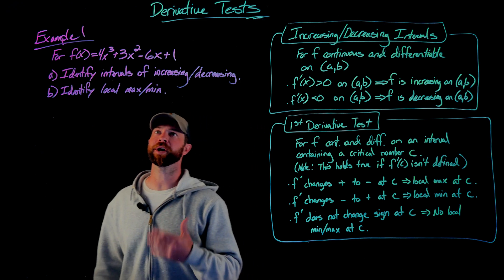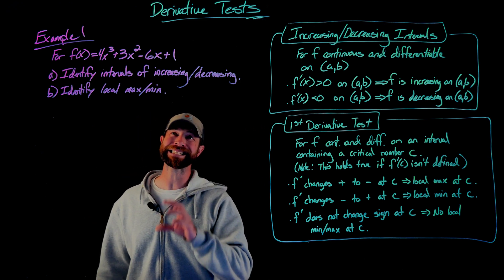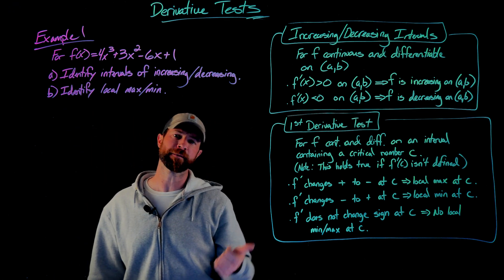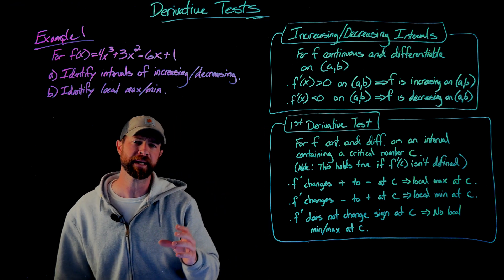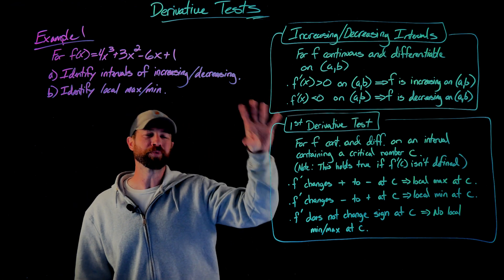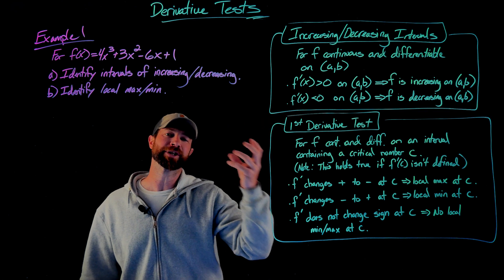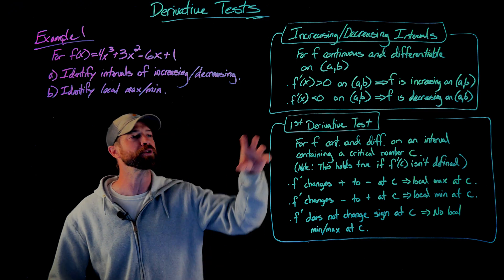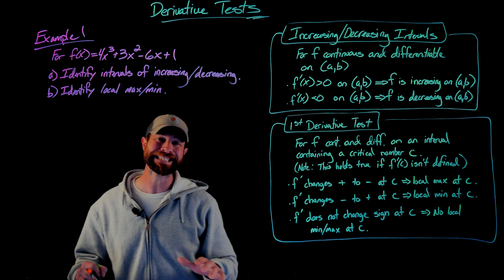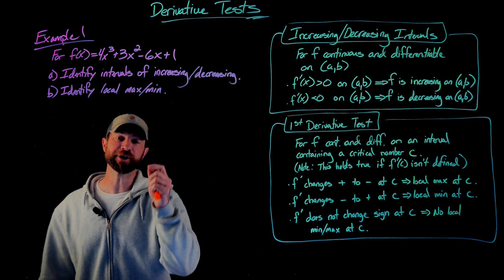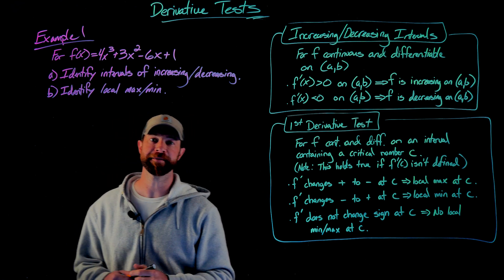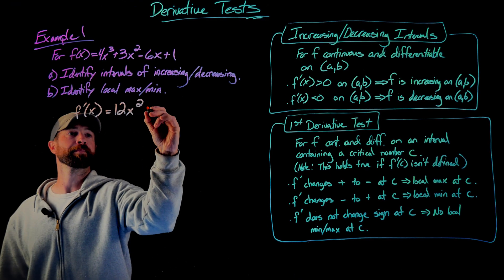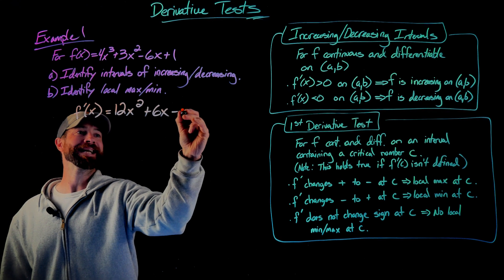Here we have our first example: f(x) equals 4x cubed plus 3x squared minus 6x plus 1. We're going to find the intervals of decreasing and increase and the local max and min — but it's important to remember that these really aren't two separate things; they're the exact same work. First, I'm going to identify the first derivative, and using the power rule I get 12x squared plus 6x minus 6.